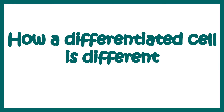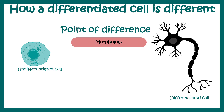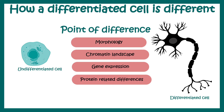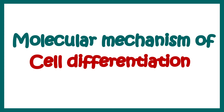Now let's talk about how a differentiated cell differs from a normal cell. Undifferentiated and differentiated cells are quite different from various perspectives — morphologically (a stem cell looks very different from a neuron), in chromatin landscape, gene expression profiles, post-translational modifications, and epigenetic changes. There could also be different regulatory RNAs driving changes in gene expression or chromatin landscape. The question is: what is the molecular mechanism of cell differentiation?